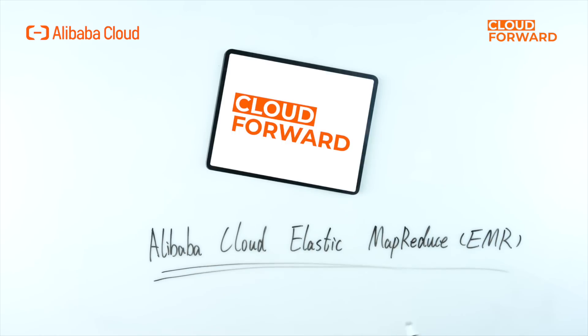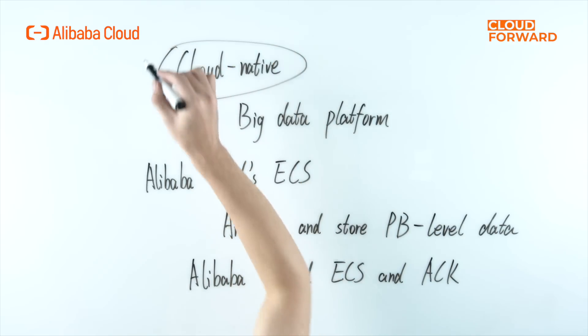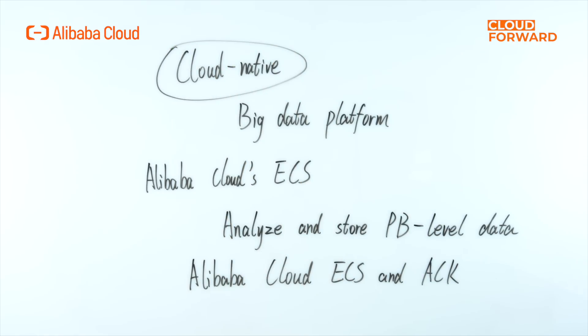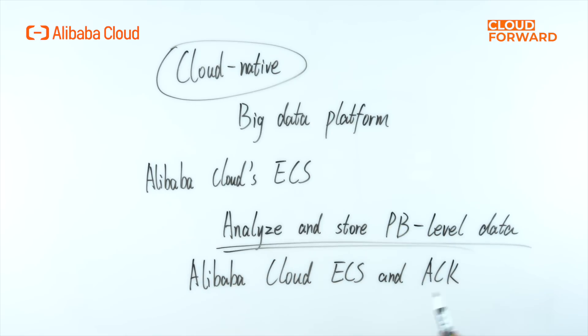Alibaba Cloud launched Elastic Map Reduce, or EMR, in this context to free users from the time-consuming procurement preparations and O&M works, allowing them to focus solely on the processing logic of their applications. EMR is a cloud-native big data platform built on top of Alibaba Cloud's ECS. Users can quickly and cost-effectively analyze and store PB-level data by leveraging EMR's open-source components.